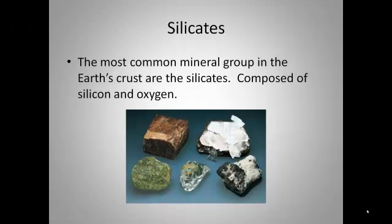The most common mineral group in the earth's crust are the silicates. These silicates, especially quartz, are composed of silicon and oxygen. Quartz is found in many, many different types of rocks — especially when you start talking about granite. The silicates are definitely the most common mineral group in the earth's crust, and are used quite a bit in products like glass.